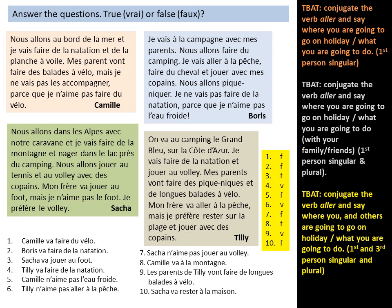Number three: Sasha is going to play football — false again. It says her brother is going to play football: mon frère va jouer au foot, but she doesn't like it. Number four: Tilly's going to go swimming — that is true. Je vais faire de la natation. Number five: Camille doesn't like cold water — false. It doesn't mention that in Camille's text; it's in Boris's: je n'aime pas l'eau froide. So number five is false.